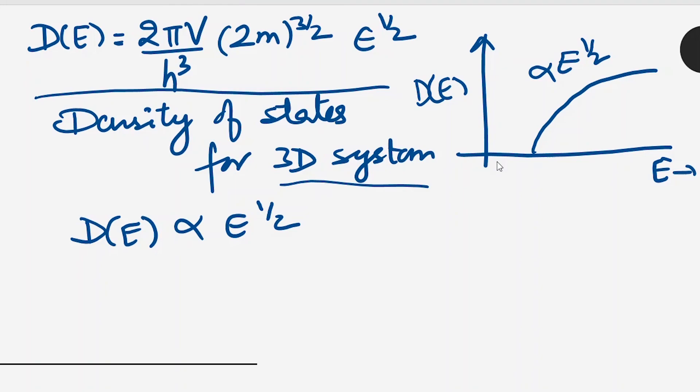So firstly we have to write the expression for density of states, which is given as (2π V / h³)(2m)^(3/2) E^(1/2). This is the density of states for a 3D system. Similarly we can find it for 2D, 1D, and 0D systems. So in a 3D system our density of states is directly proportional to E^(1/2).